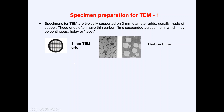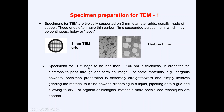Specimens for TEM need to be less than 100 nanometers in thickness in order for the electrons to pass through and form an image. The reason is that we actually want the electrons to pass through the sample, so the thickness must be less than 100 nanometers.